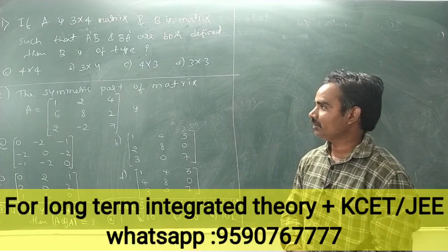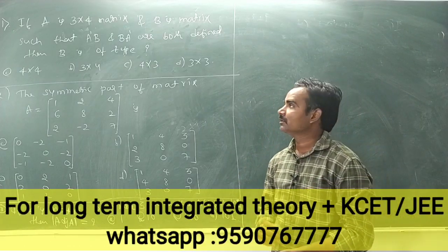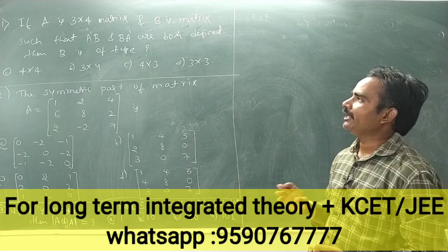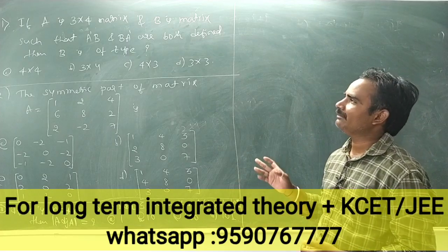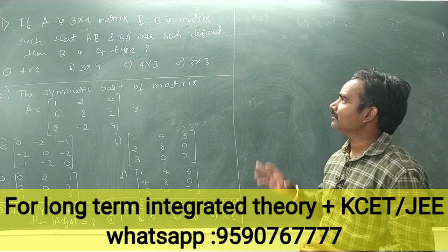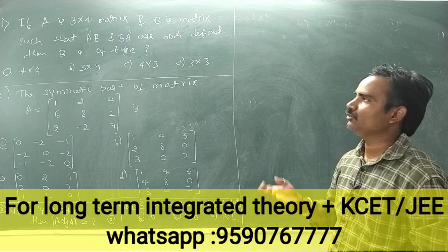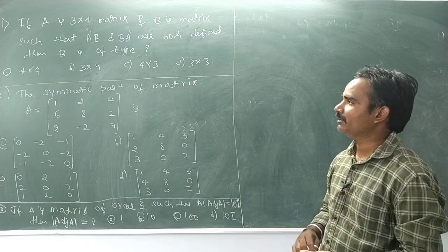Good afternoon students, we will solve problems from 2014. First problem: if A is a 3 by 4 matrix and B is a matrix such that A'B and B'A are both defined, then find the order of matrix B.